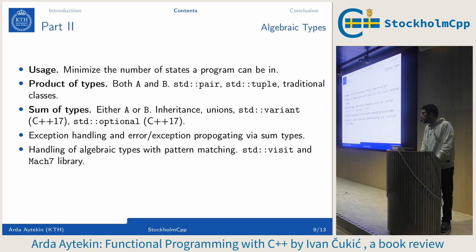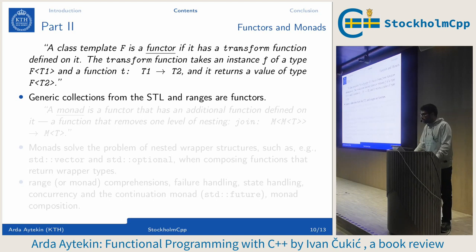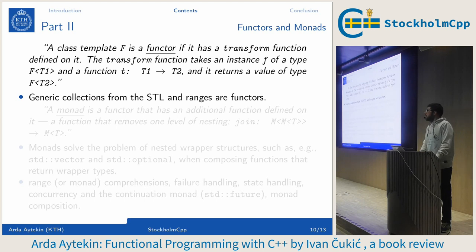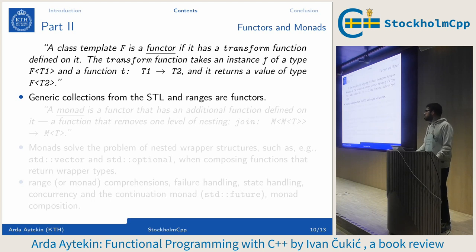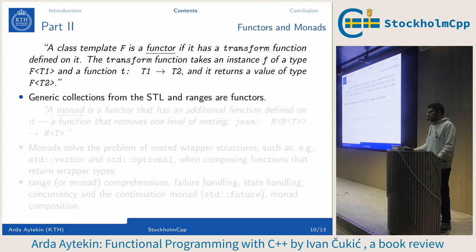The book introduces two concepts from the functional programming world: functors and monads — this time it's the functional programming world's definition of functors, not the C++ one. A class template F is a functor if it has a transform function defined on it, where that function takes an instance of type F<T1> and a function mapping T1 to T2, and returns a value of type F<T2>. Basically, all generic collections from the STL and ranges are functors.